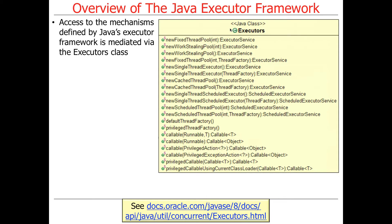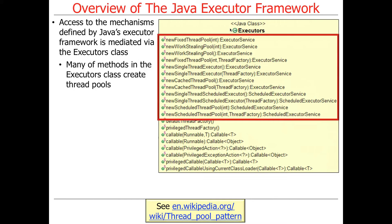The way in which you typically access the mechanisms provided by the Executor Framework is via a utility class called the Executors class. The Executors class has all kinds of factory methods that you can use to allocate various kinds of things. These factory methods will make different kinds of pools, and we'll talk about some of those pools. You've already had a chance to play around with some of this stuff in earlier assignments.